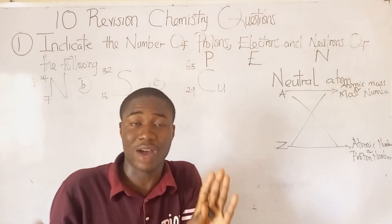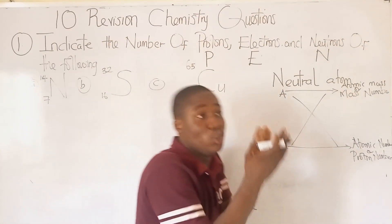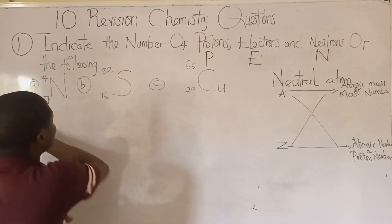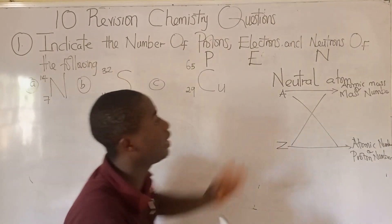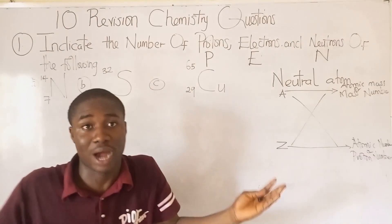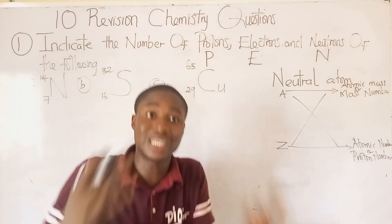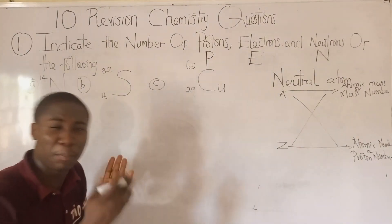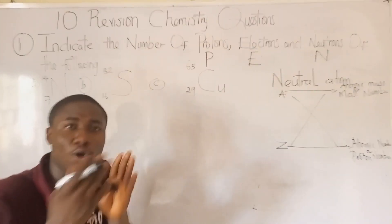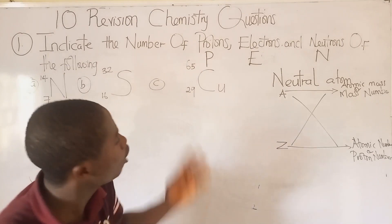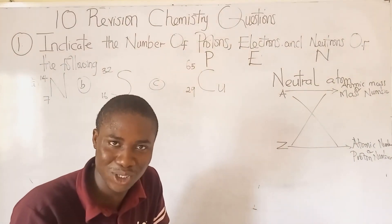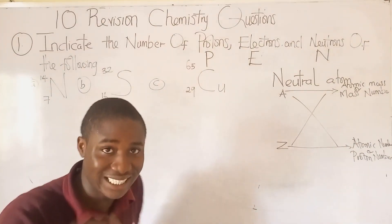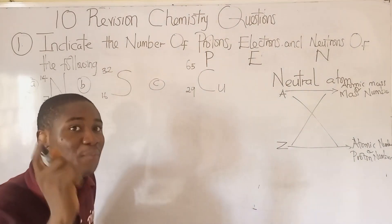We have different types of atoms — an atom can be neutral and also an atom can be charged. But due to the questions we're having here, the atoms are all neutral; they are without a charge. Each charge can be positive or negative. So how do we solve this practice question? Let's get into these particular questions.